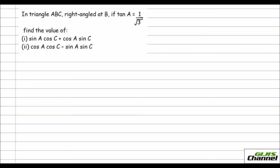Hi all, this is Vasudeh. In this video, we will try to solve a problem with trigonometric ratios. The problem is: in a triangle ABC, right angle at B, if tan A is 1 over root 3, we need to find the value of sin A cos C plus cos A sin C.